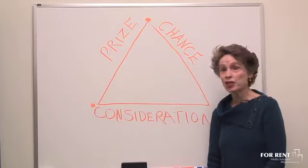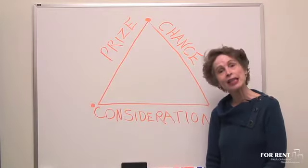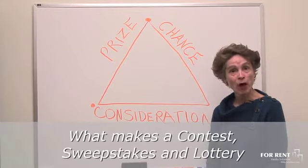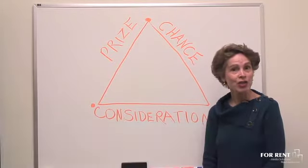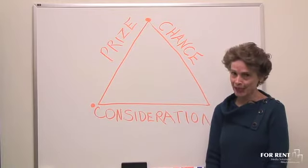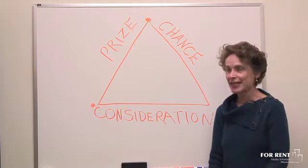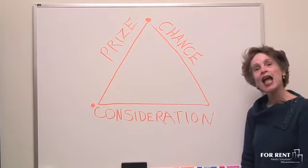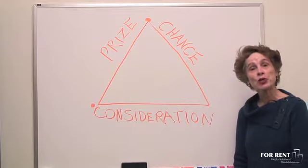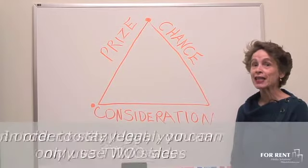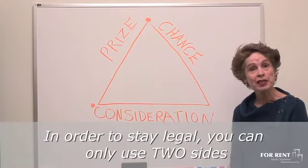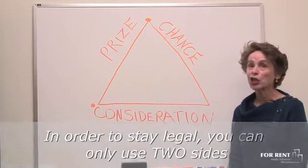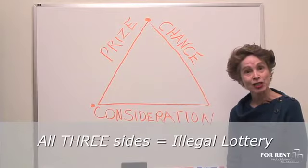To better help you understand what makes a contest, what makes a sweepstakes, and what makes a lottery, I've provided you with this triangle that has three sides, labeled consideration, prize, and chance. What you need to know is that in order to stay legal, you may only ever use two sides of the triangle. If you use all three sides, you're going to have a lottery, and that is against the law.